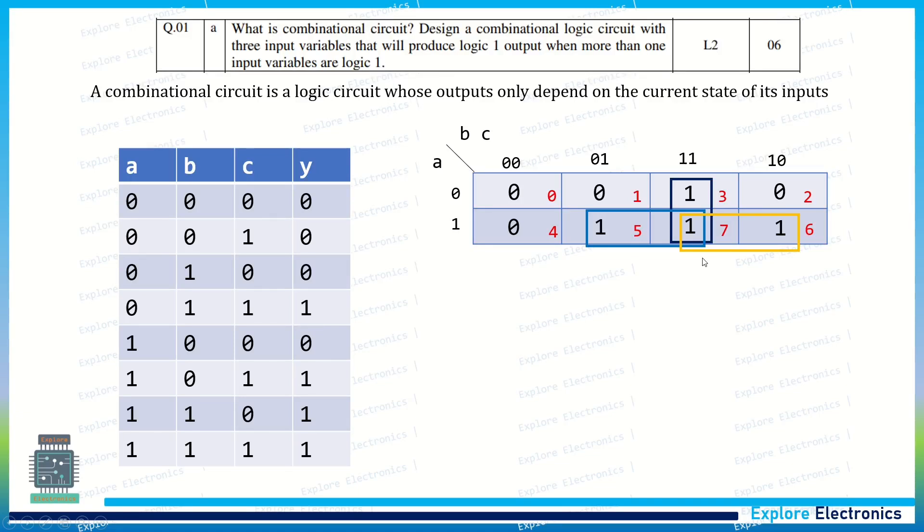Now we can generate the expression. For this group, this group gives us A, and here, remaining with C, B gets cancelled, so AC is the expression for this group. Then for this black group, we will get B; here A gets cancelled, BC is the expression. So for this orange group, we will get A and C gets cancelled, AB.